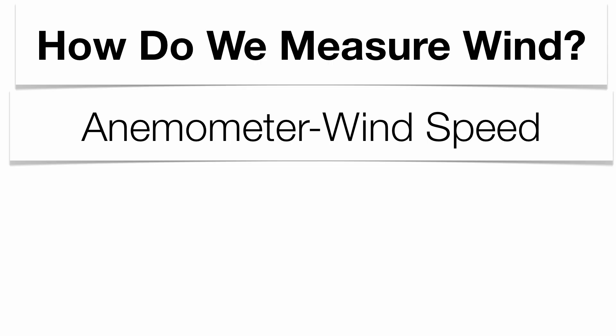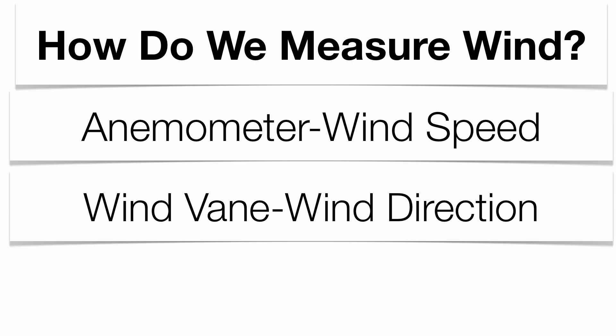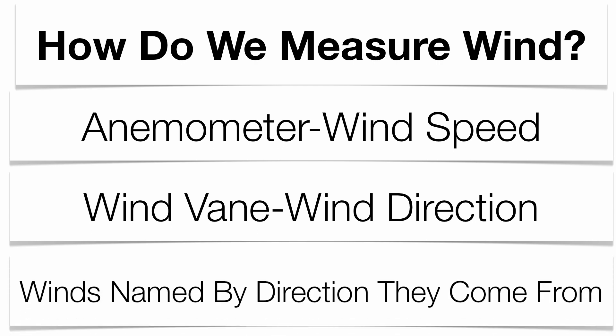How do we actually measure wind? There are two pieces of equipment we use. An anemometer measures wind speed, and a wind vane gives you direction. The big thing about wind direction is that winds are named from the direction they come from. So if you hear that the winds are a southeast wind, that means the winds are coming from the southeast. If it's a northwest wind, winds are coming from the northwest.